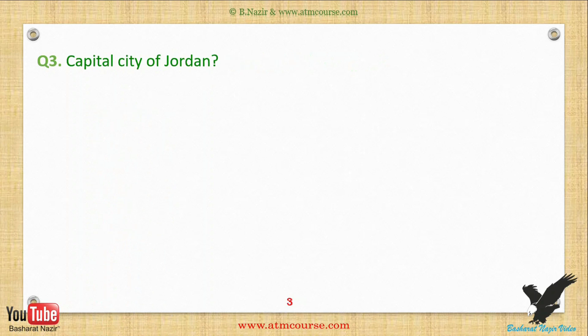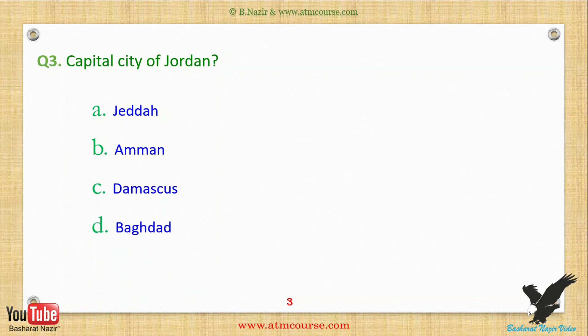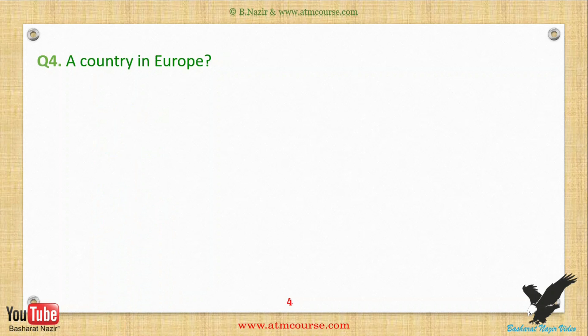Question three: Capital city of Jordan — choose from one of these answers. Question four: A country in Europe — choose from one of these answers.